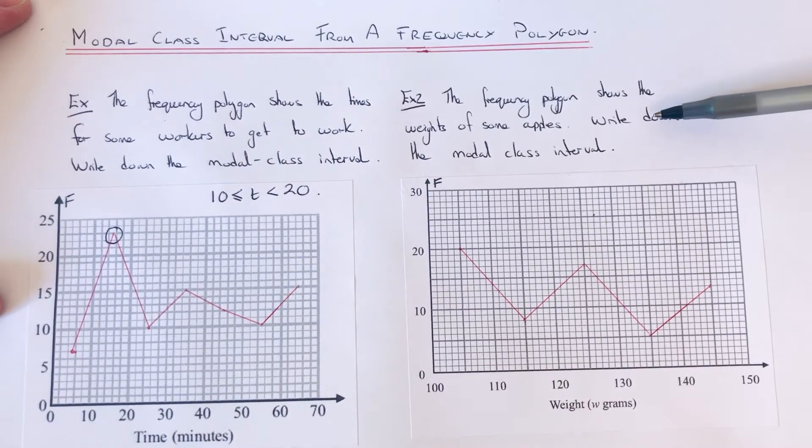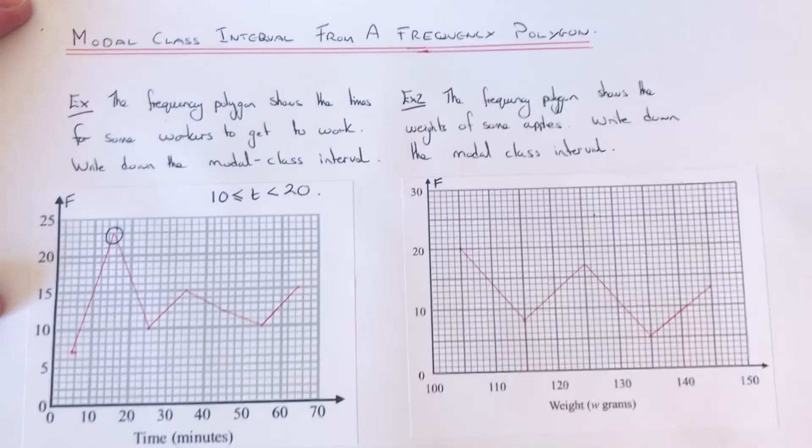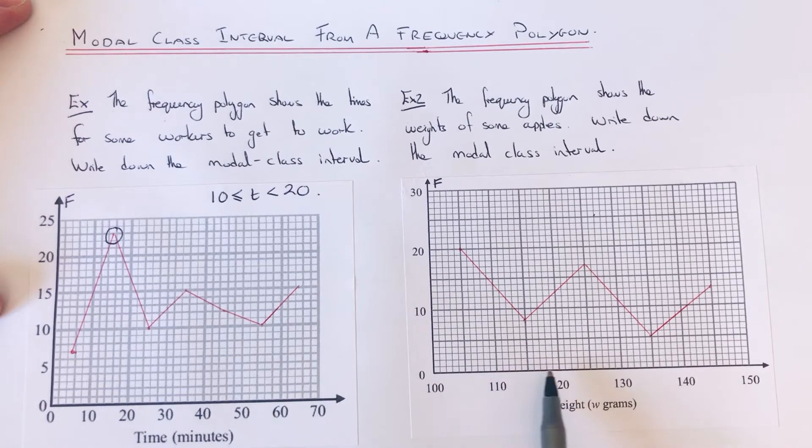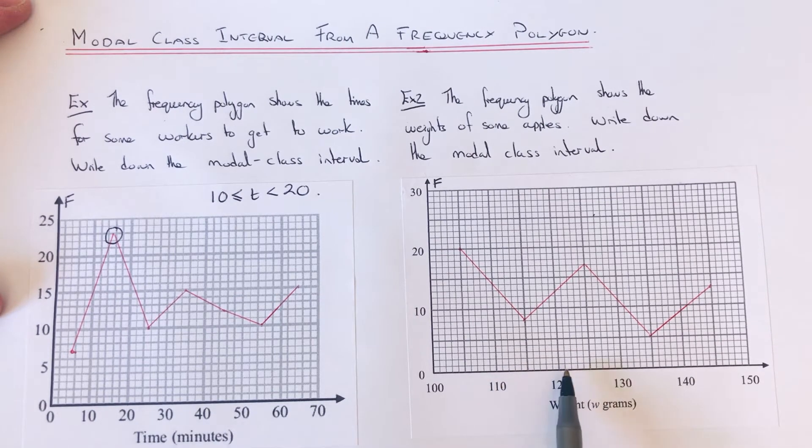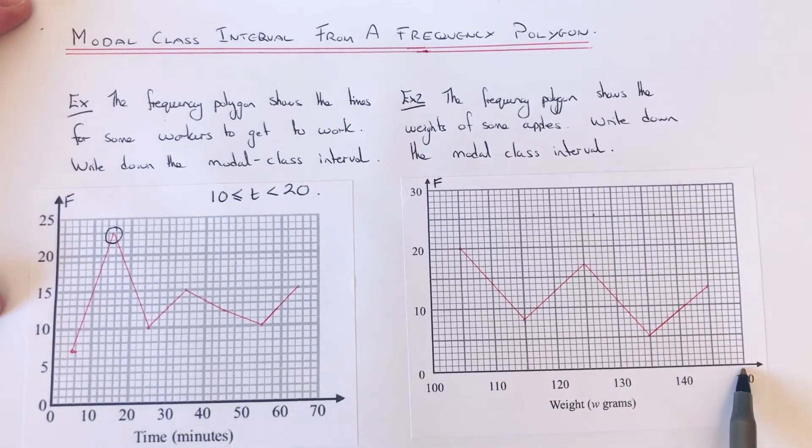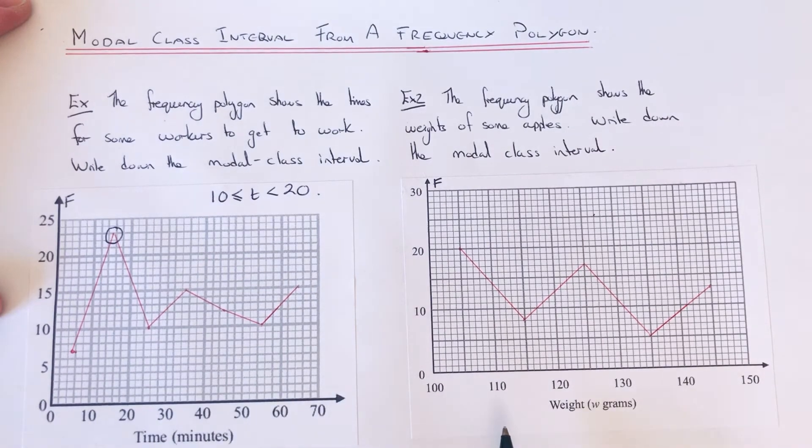We've got to write down the modal class interval. So again, our groups are 100 to 110, 110 to 120, 120 to 130, 130 to 140, and 140 to 150. So again, we're just trying to find the one with the highest frequency.